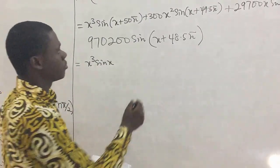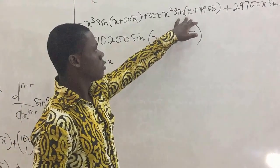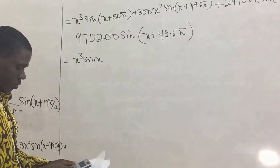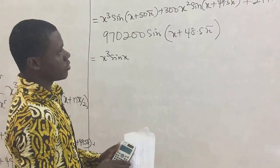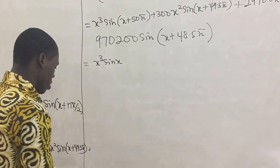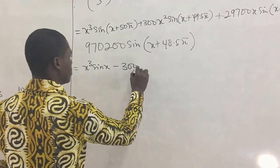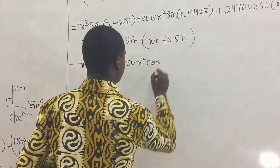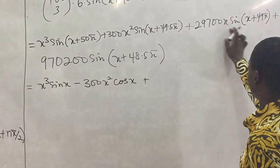So we use the same thing to simplify this one. So we have 300 here, x squared, sine. So what will sine 49.5 pi? We'll sine 49.5 pi. Okay, it's giving us negative 1. Okay, then cos 49.5 pi is giving us 0. It means that here it's going to give us negative 300 x squared, then cos x. Okay, so we'll move on, plus.